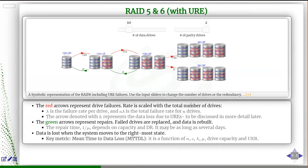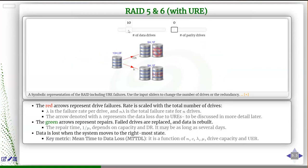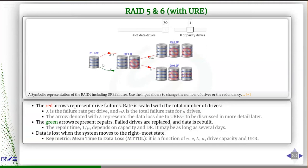You lose data if you reach the data loss states, and the question is how to compute that probability. Consider 30 drives with no redundancy — there's a good chance you'll lose one drive in a year. With one parity you can recover from a single failure, but if another failure occurs while you're actively recovering, your data is gone because you have two simultaneous failures. That's why you should go to two redundancies — RAID 6.